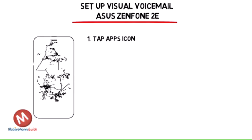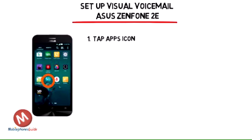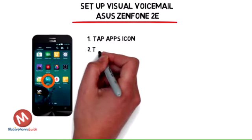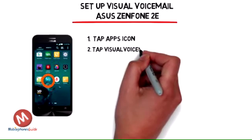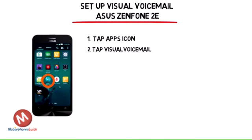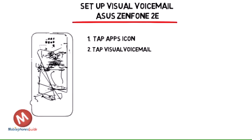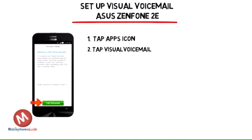Step 1: From the home screen, tap the Apps icon. Step 2: Swipe to, then tap Visual Voicemail.